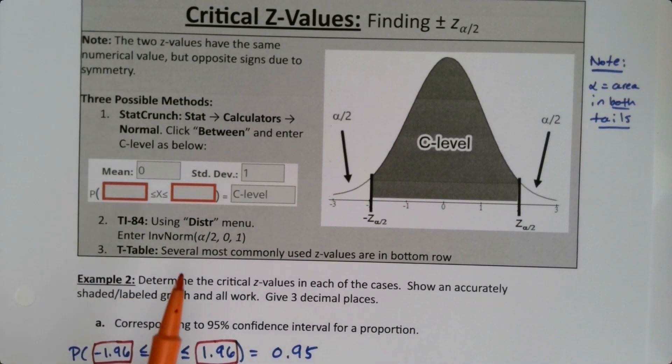Now, I'm actually going to show the table as well as the TI-84. The table is really easy. It's just, you know, if you know what your alpha is, then you can kind of, or alpha over 2. I take it back, it's not that easy. But I'm going to show the table and I'm going to show the TI-84. But if you're comfortable with using StatCrunch, you can just skip ahead to the next video.